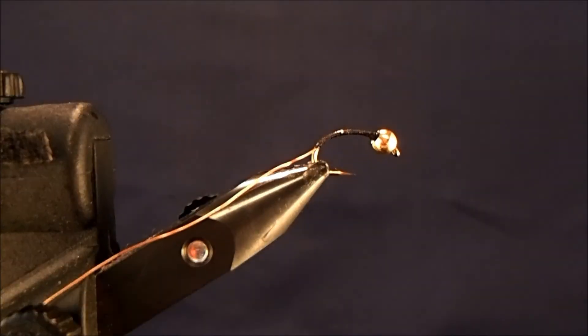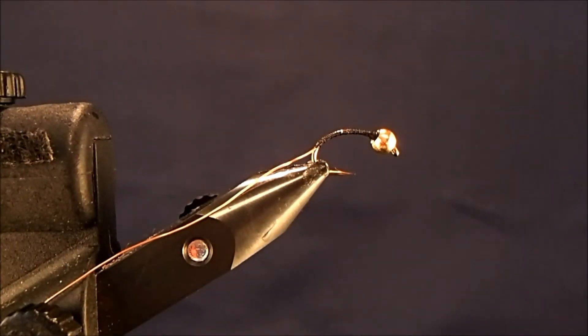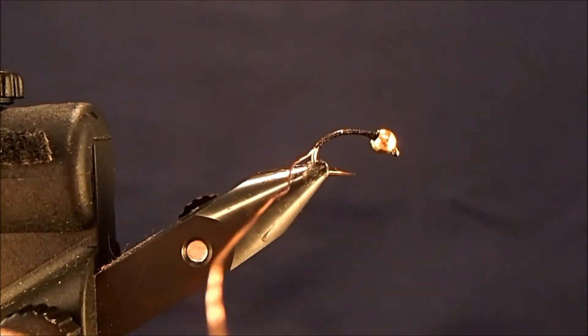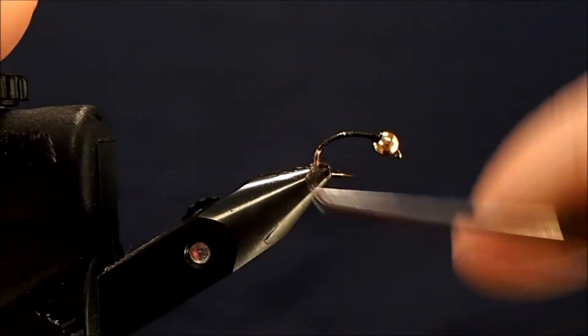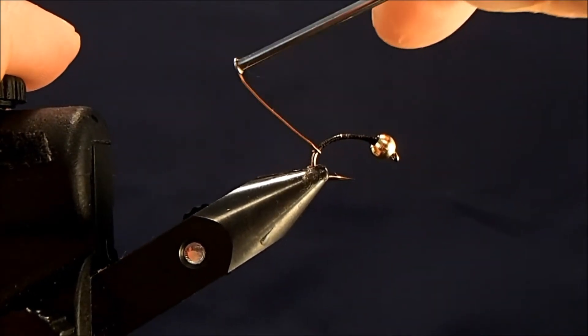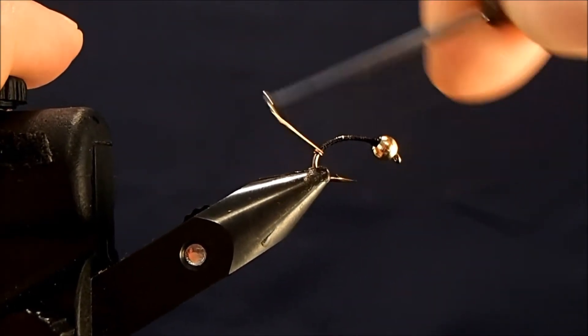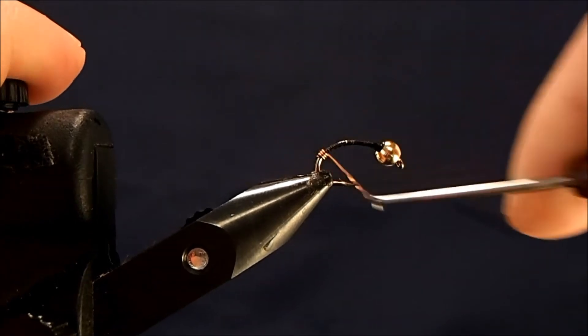I'll reattach that back on, but now I'm free to start to wrap this with the bobbin. I'll draw up my copper and just start to make some nice even wraps all the way up the body.